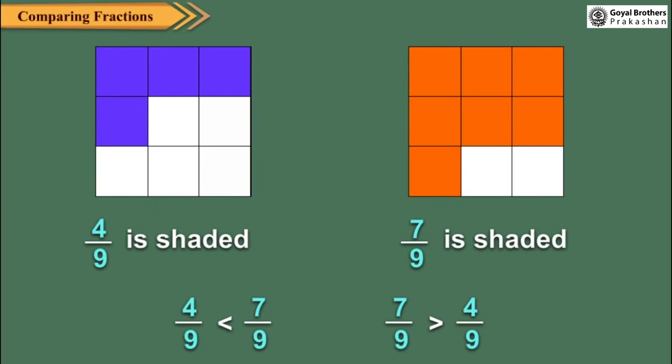Here, 4 upon 9 is less than 7 upon 9. Or, 7 upon 9 is greater than 4 upon 9. So, we can say that between two fractions having the same denominator, the fraction with the greater numerator is greater.